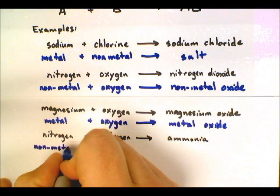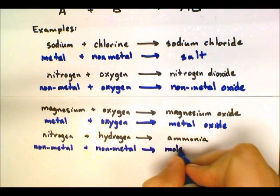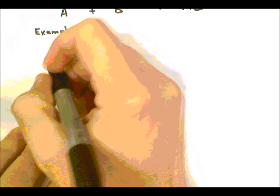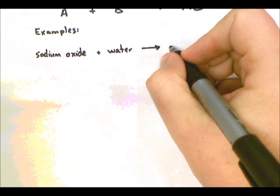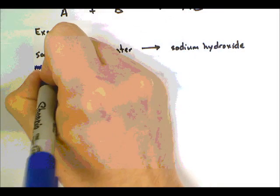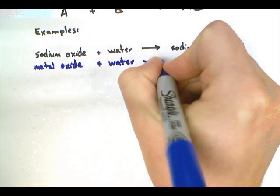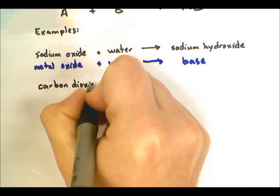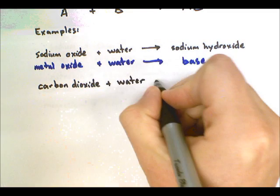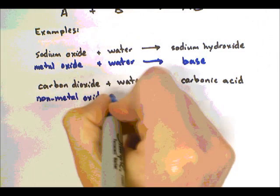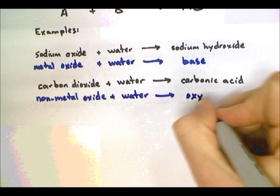Here's another one: nitrogen and hydrogen creating ammonia — a non-metal reacting with a non-metal producing a molecular compound. Also, remember those metal oxides and non-metal oxides. Metal oxides, when placed in water, can react and create what we call a base. For example, sodium oxide and water creates sodium hydroxide. Non-metal oxides can also react with water to create what we call an oxy acid. For example, carbon dioxide and water produces carbonic acid.